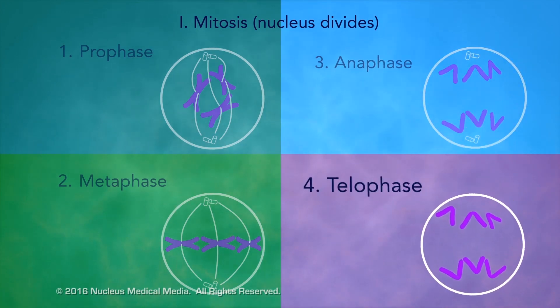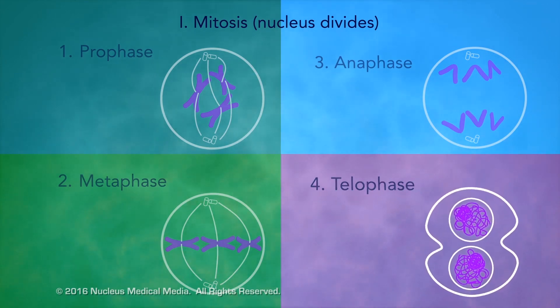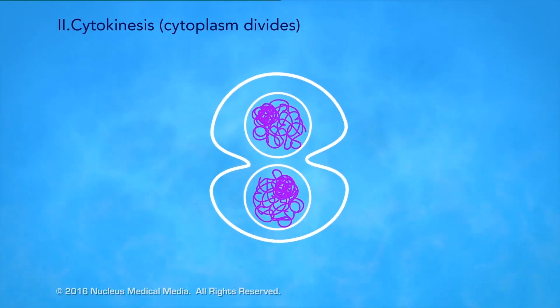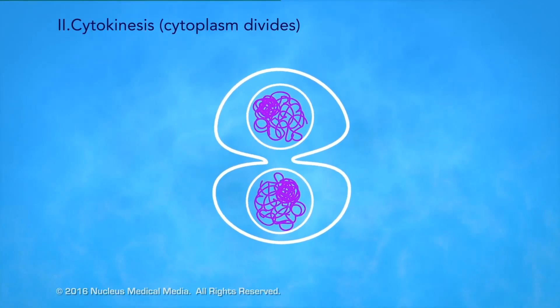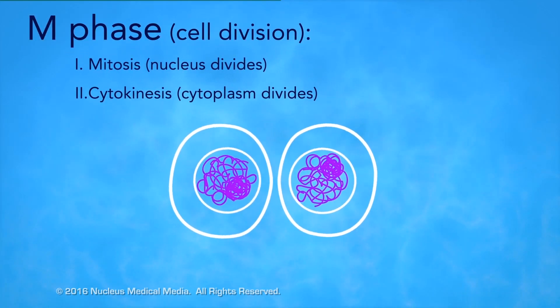And in telophase, the nucleolus and nuclear membrane reform. The chromosomes disperse into chromatin. Cytokinesis is division of the cytoplasm.